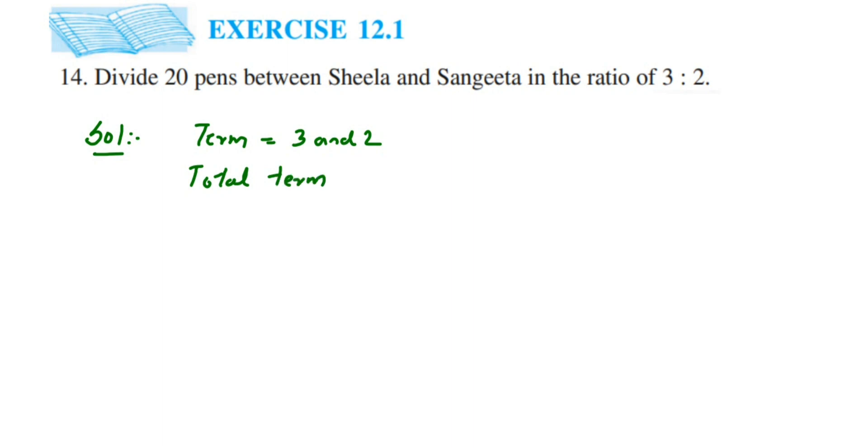Now here's the important point: the ratio is 3 is to 2 means out of 5 parts. Total is 5, right? 3 plus 2—we are adding both the terms 3 and 2, then we get 5. Out of these 5 parts, 3 parts go to Sheela and 2 parts go to Sangeeta.